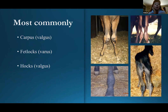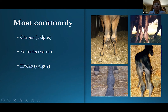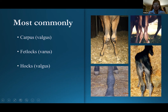The most common angular limb deformities we're going to see involve the knees, the fetlocks, and the hocks. A valgus deformity means that the limb below the abnormal joint actually sits further away from the body than it should. Contrast that to a varus deformity — the limb below the deviation is more axial than it should be. Most commonly we get carpal valgus — these knock-kneed foals — a tarsal valgus, and a fetlock varus. However they can get the converse in any of them.